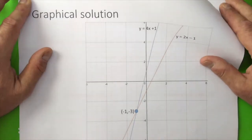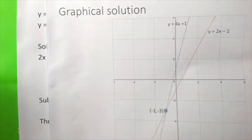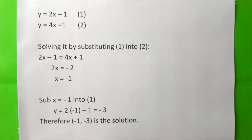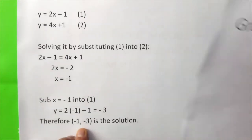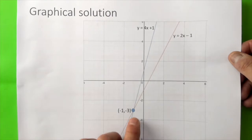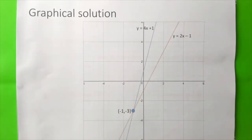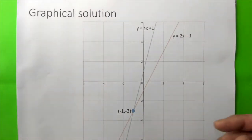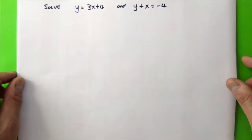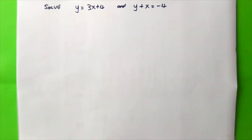Let's go back to the substitution method — the solution is (minus 1, minus 3). With the graphical method, it is the same. Now I'd like you to pause the video for about 5 minutes and work out the solution for these two simultaneous equations using the graphical method.